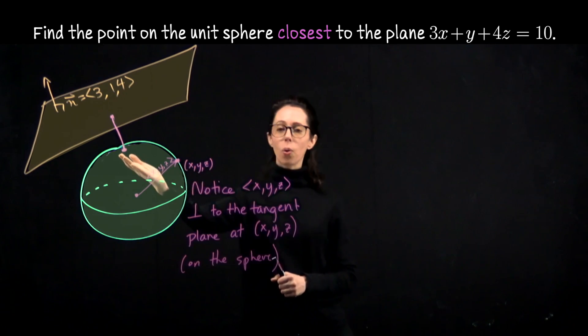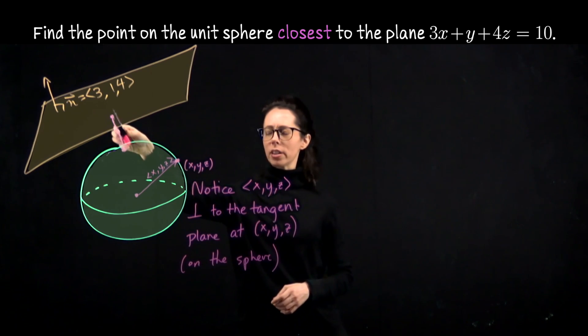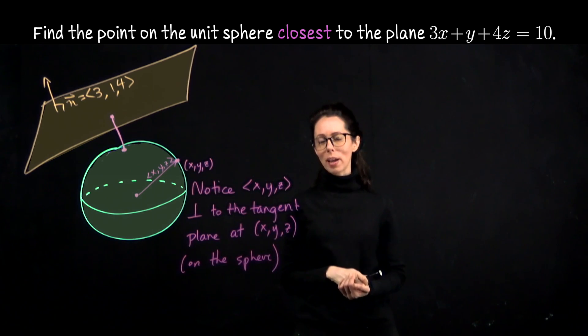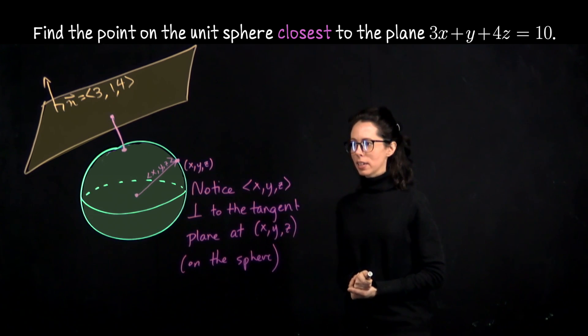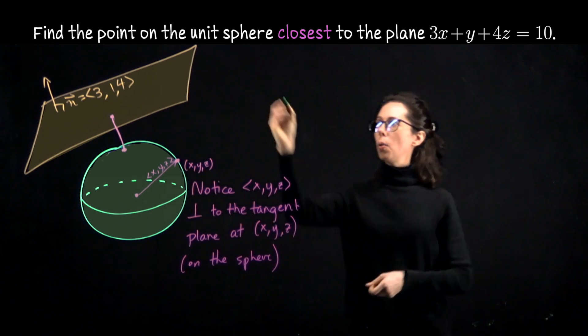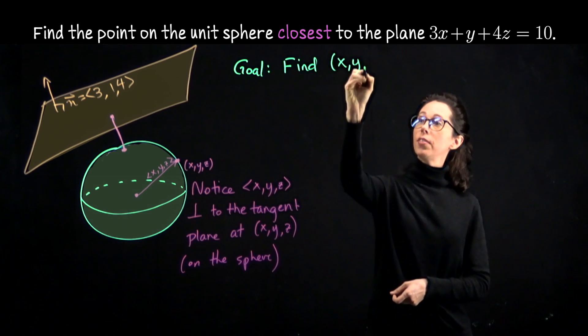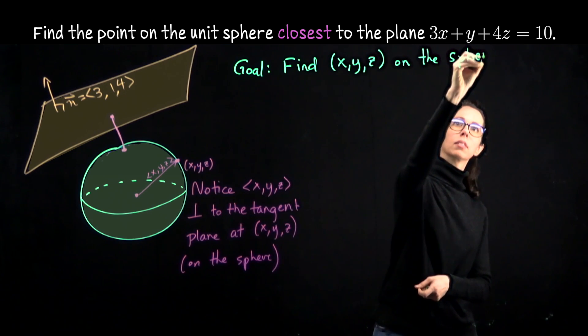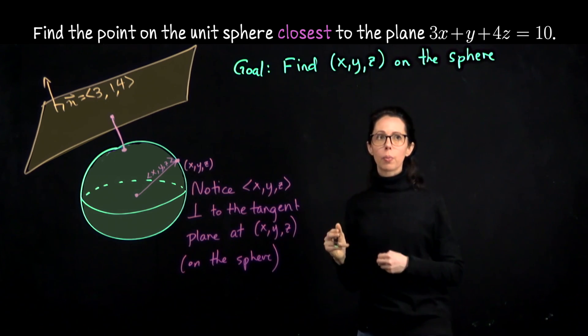So whatever the coordinates of this point are, we can characterize this orthogonal vector pointing up here as parallel to x, y, z. So what we want is to find x, y, z. I'm going to start writing this down. Our goal is to find x, y, z on the sphere so that the vector x, y, z is parallel to 3, 1, 4.